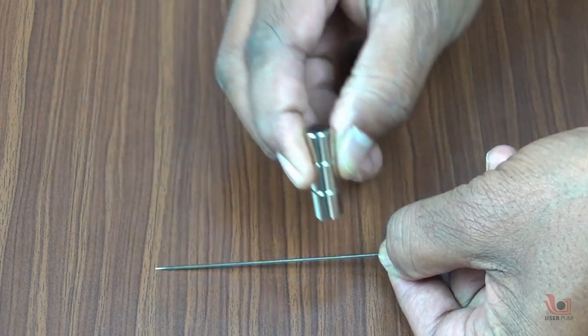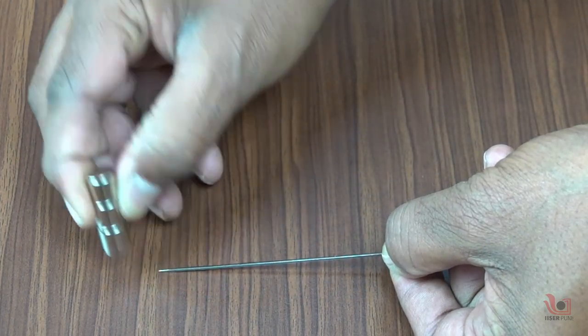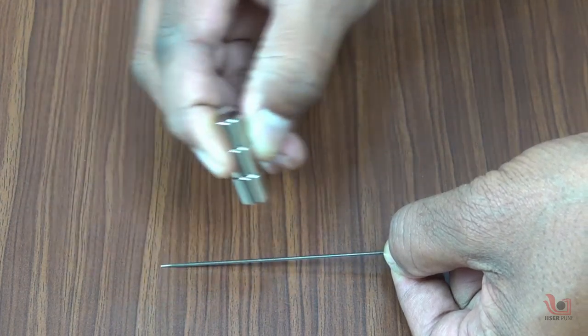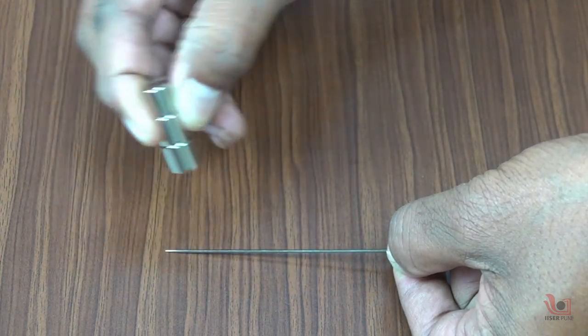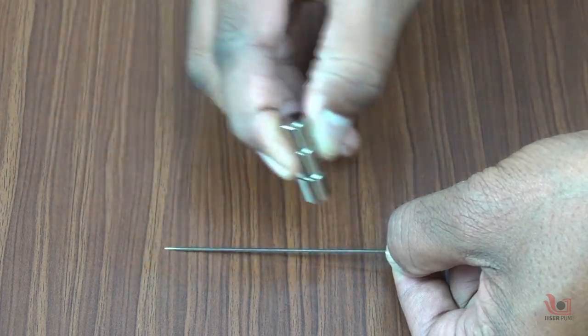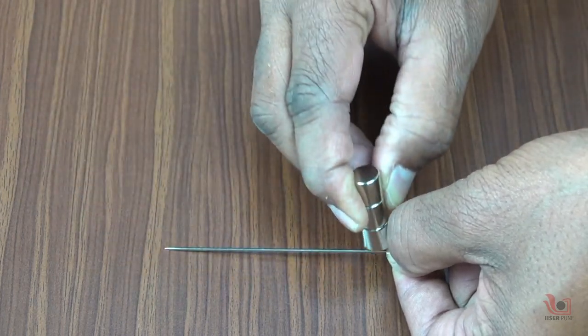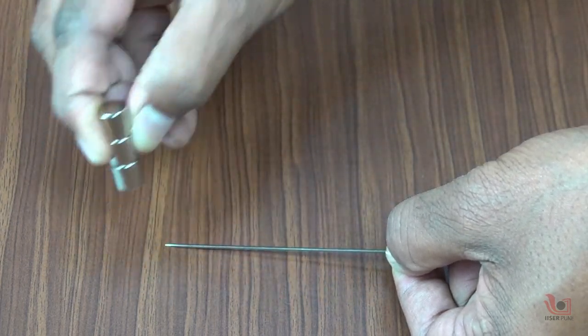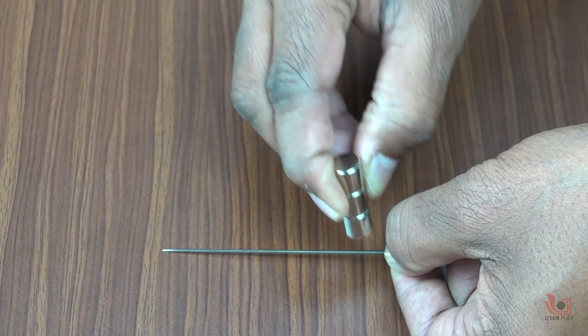A single touch method is one of several methods of making a magnetic material like soft iron into a magnet. In this method, one end of the magnet, say north pole, is placed at one end of the needle which is then rubbed over the needle from one end to the other end, and then lifted and brought back to the first end.